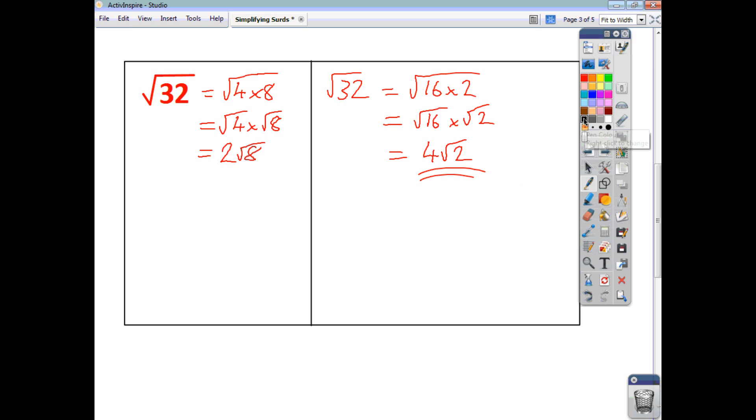Well, the answer is that we haven't actually finished this one. Because if you look at the 8 under the square root sign, you can break it down further. Because 8 has a square factor. 4 goes into 8. So what we do is we continue to break this down. And we say, well, that's the same as 2 times the square root of 4 times 2. Which is the same as 2 times root 4 times root 2. And root 4 is 2. So it's 2 times 2 times root 2. Two 2's are 4. So your final answer is 4 root 2. Up to this point, it was partially simplified. You've got to follow through by checking that what you end up with at the end cannot be broken down any further. And that's the case here with 4 root 2.